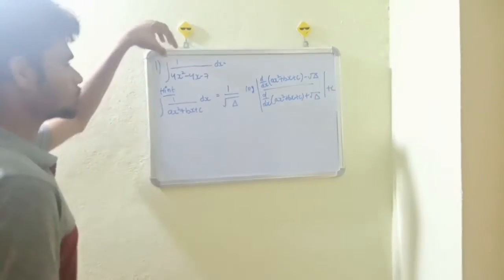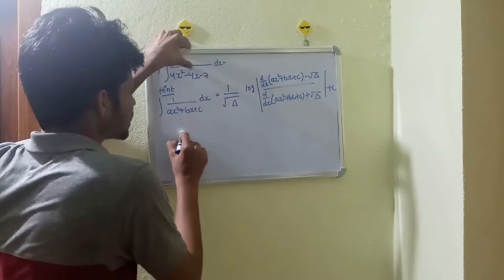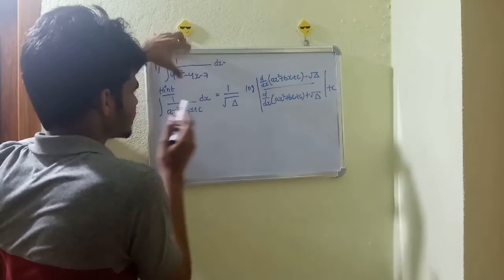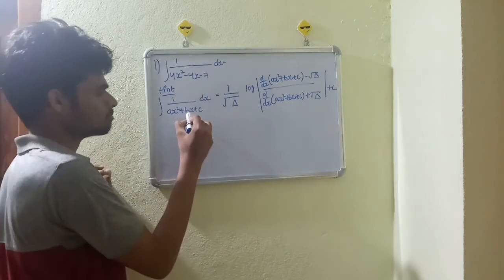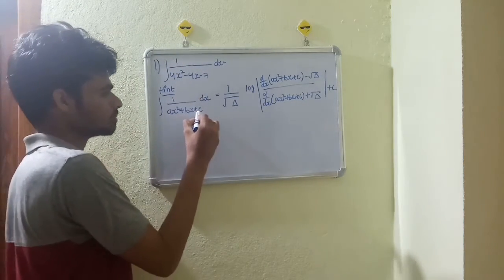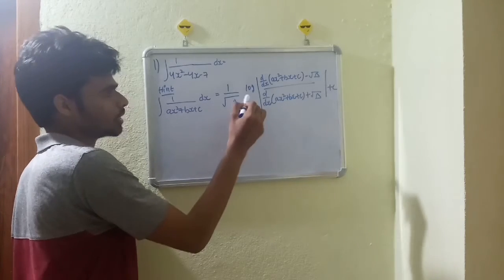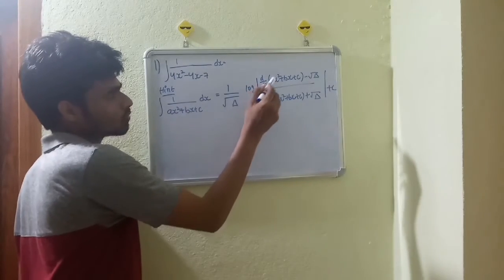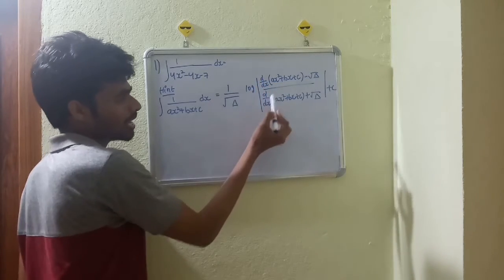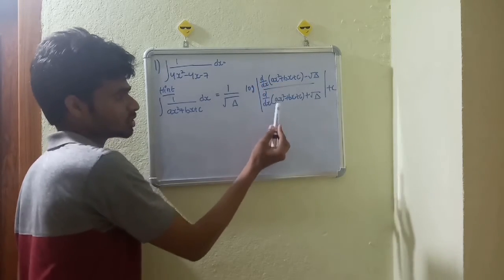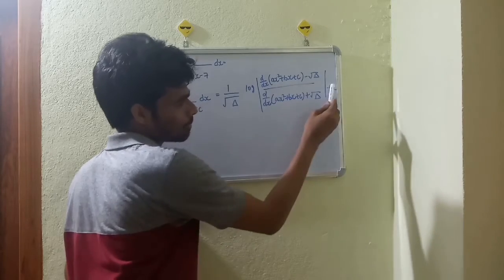First problem: integration of 1 by (4x² minus 4x minus 7) dx. Hint — the formula is: integration of 1 by (ax² + bx + c) dx equals 1 by root(delta) into log of (d/dx of ax² + bx + c minus root(delta)) divided by (d/dx of ax² + bx + c plus root(delta)) plus c.